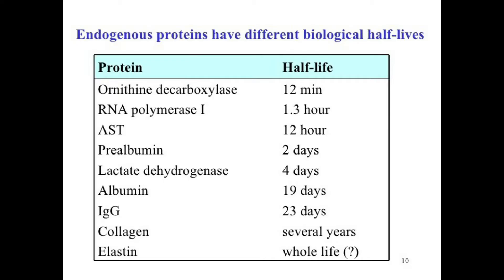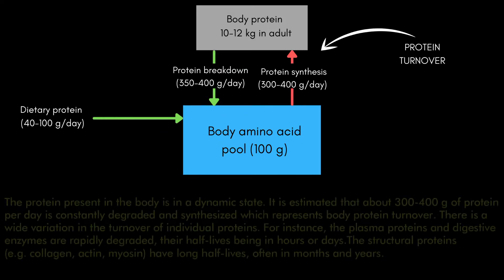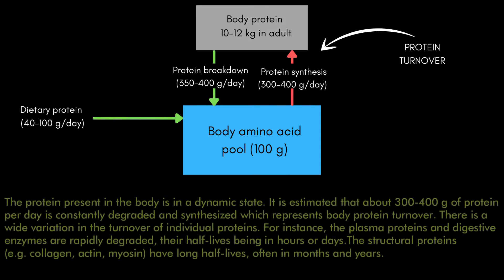Plasma proteins have a relatively short half-life, ranging from around 30 minutes to a few days. Structural proteins like keratin and collagen, however, have a much longer half-life — ranging from months to years. So structural proteins break down very slowly, while plasma proteins break down quickly and continuously replenish the amino acid pool.